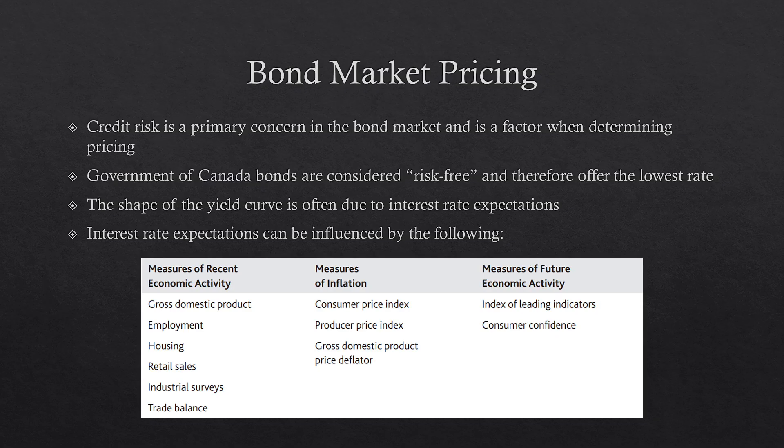We're going to start with bond market pricing. Credit risk is a primary concern in the bond market and it's a pretty big factor when determining pricing. Government of Canada bonds are considered risk-free and therefore offer the lowest rate. Corporate bonds, depending on the company, might have a lower credit rating meaning they would offer a higher rate for the same price. Bonds that are lower risk will offer lower rates, and riskier bonds with a higher risk of defaulting would offer higher rates.